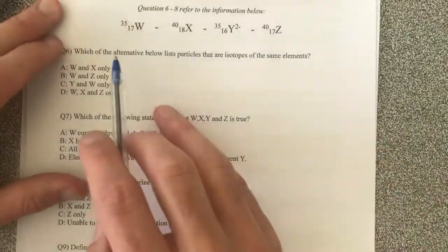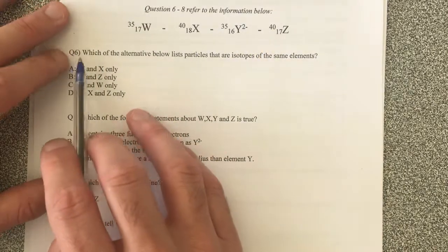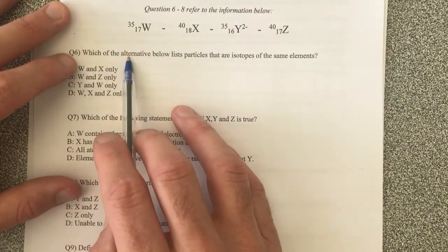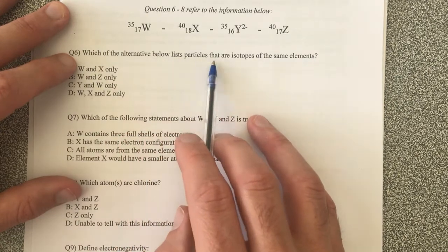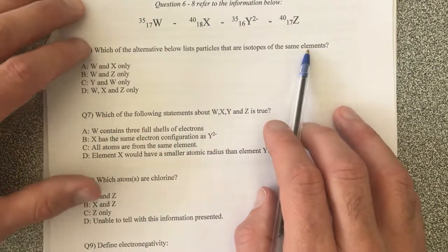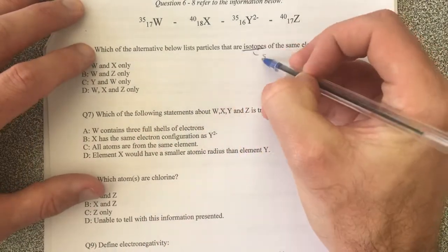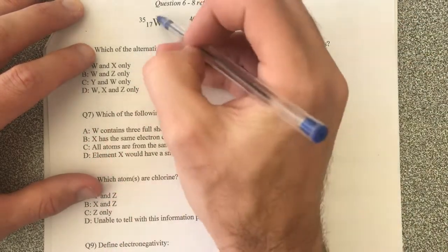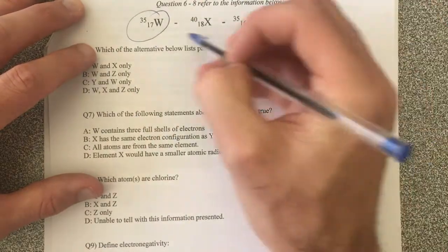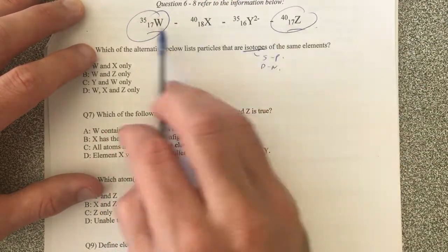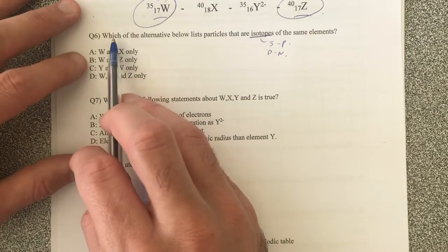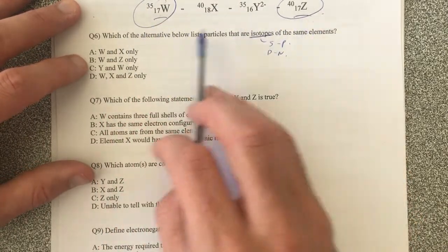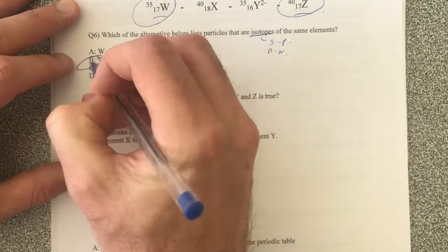Moving on. We've got this information here. Which of the alternatives below lists particles that are isotopes of the same elements? So isotopes have the same protons and different neutrons. So therefore, what we've got is W and X would be isotopes because they have the same protons, different neutrons. So, sorry, W and Z. Yeah, my apologies. So therefore, let's look at it. W and Z is correct.